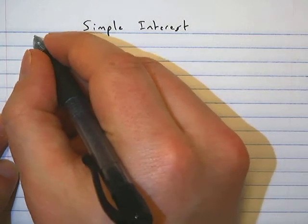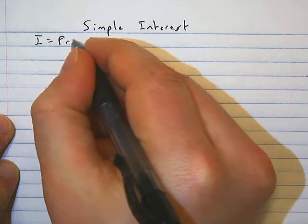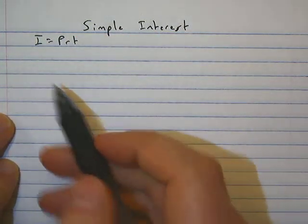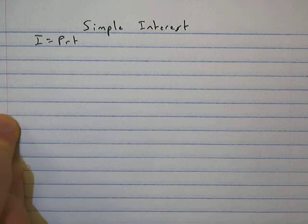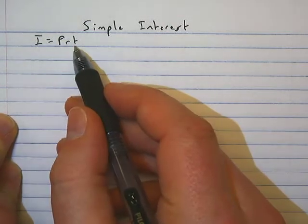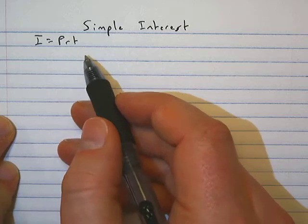So first thing we need to remember is simple interest is I equals PRT. That's the formula where I is interest, P is the principal or the beginning amount, R is the interest rate in decimal form, and T is the time in years.